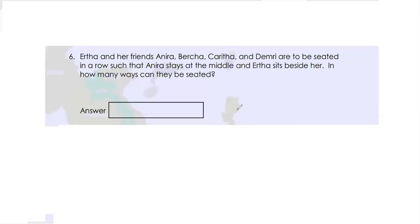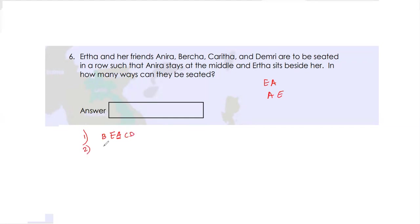Urtha and her friends Anira, Percha, Clarita and Demery are to be seated in a row such that Anira stays in the middle and Urtha sits beside her. In how many ways can they be seated? Let's call them A, B, C, D and E. There's only one condition: Anira (A) is in the middle and Urtha (E) sits beside her. E can sit to the left or right of A. All others can sit in any order.